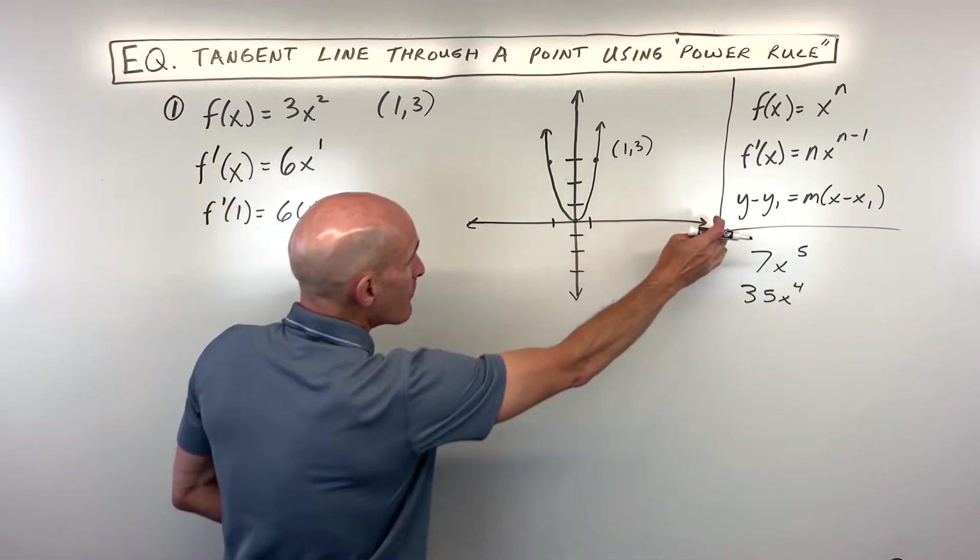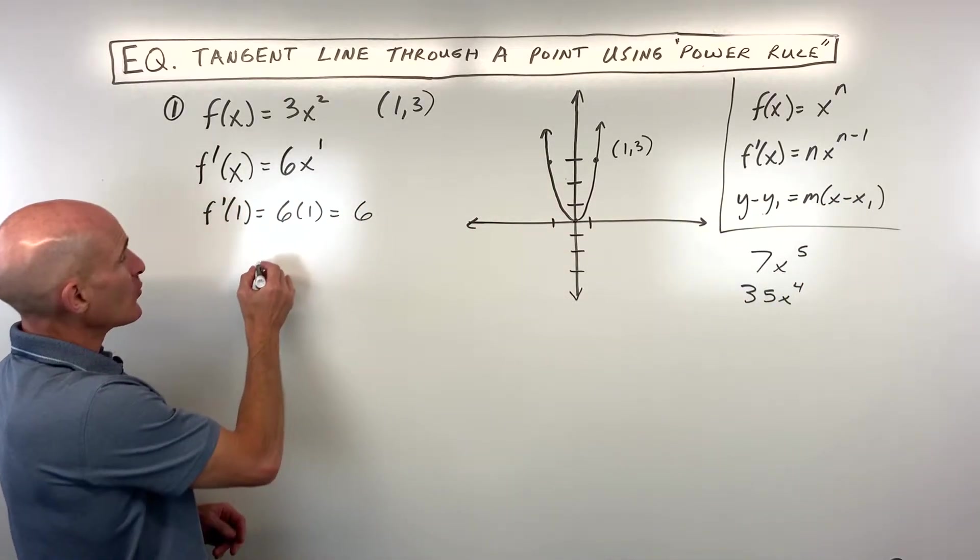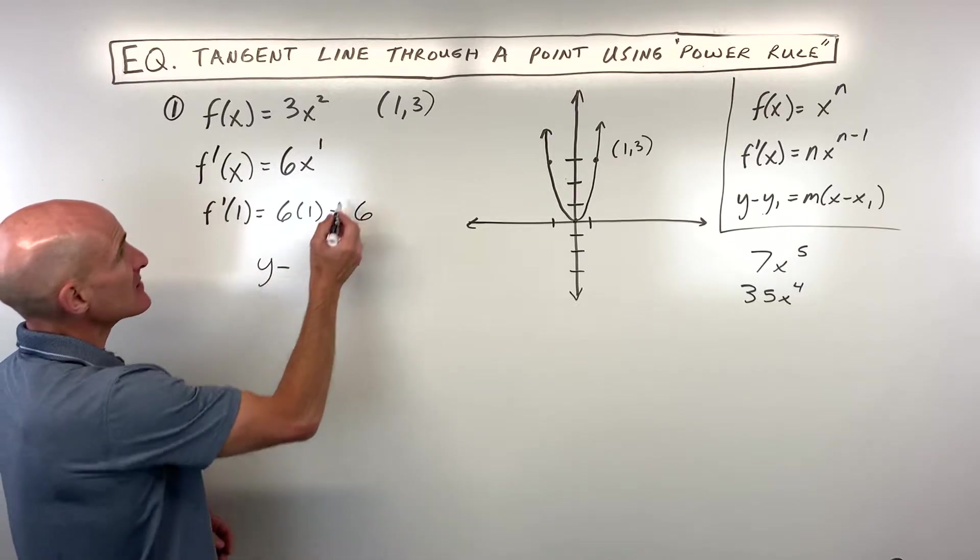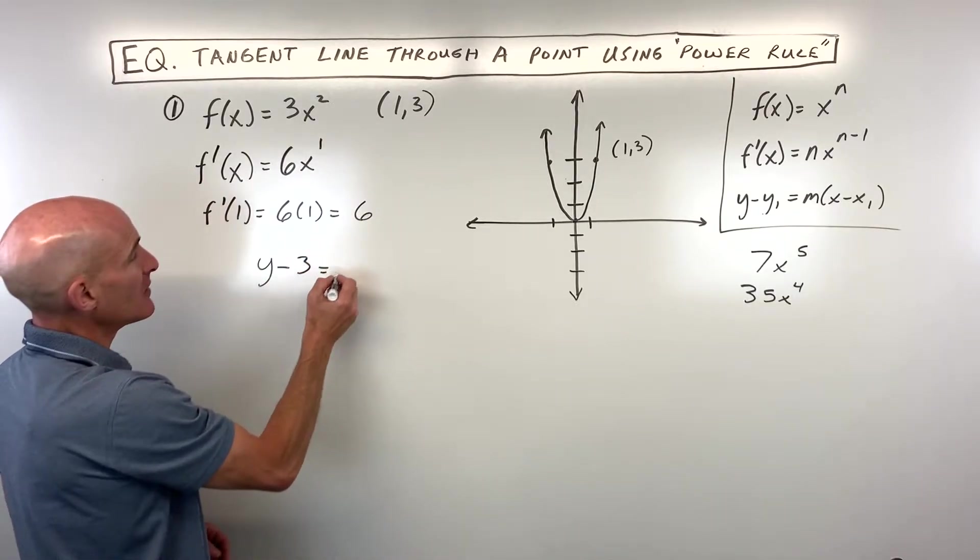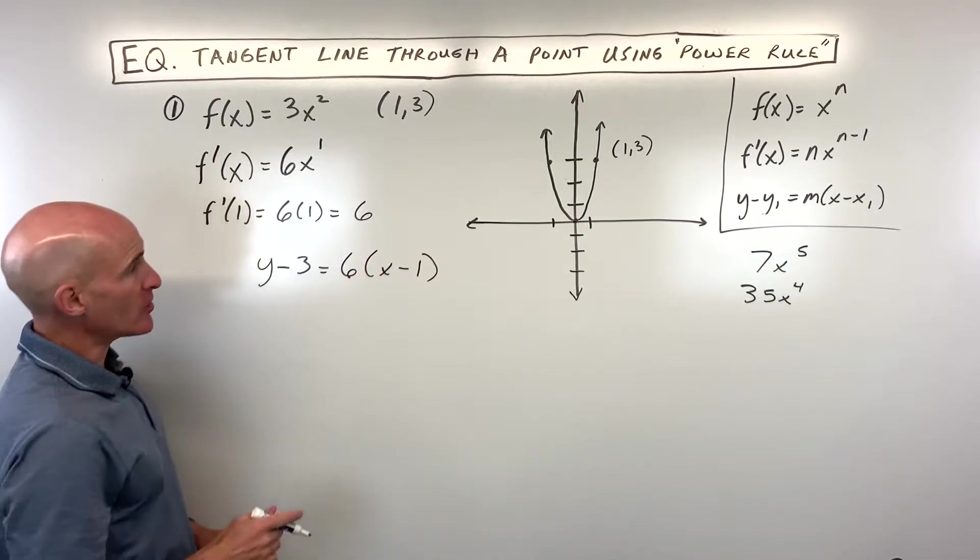We're then going to use our point-slope form of the equation of a line. You probably remember this from Algebra 1. We're going to say y minus the y-coordinate of the point equals the slope, which in this case is 6, times x minus the x-coordinate of the point.